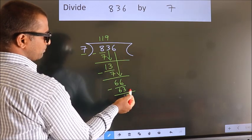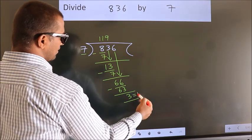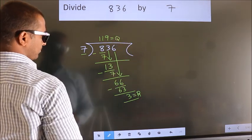No more numbers to bring it down. So we stop here. This is our remainder. This is our quotient.